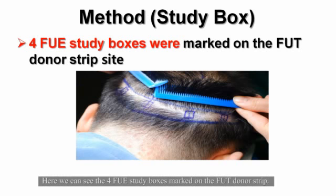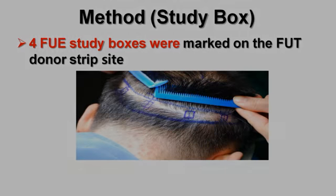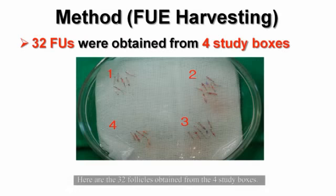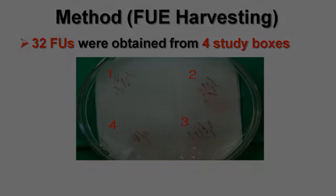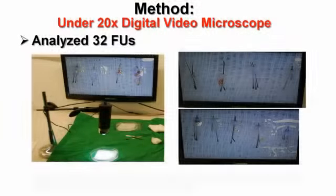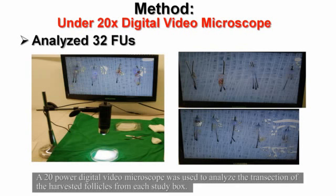Here we can see the four FUE study boxes marked on the FUT donor strip. Here are the 32 follicles obtained from the four study boxes. A 20-power digital video microscope was used to analyze the transection of the harvested follicles from each study box.